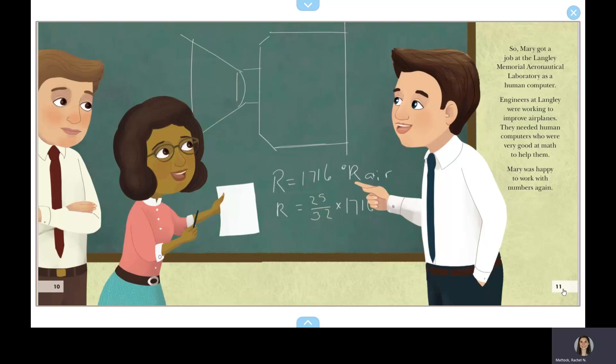Mary got a job at Langley Memorial Aeronautical Laboratory as a human computer. Engineers at Langley were working to improve airplanes. They needed human computers who were very good at math to help them. Mary was happy to work with numbers again.